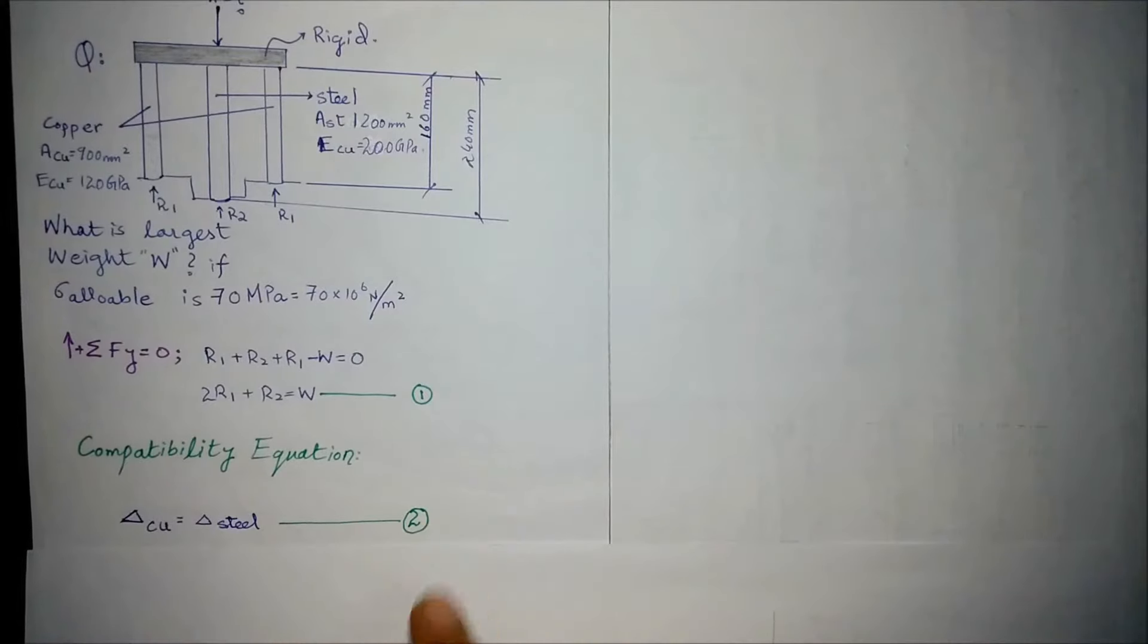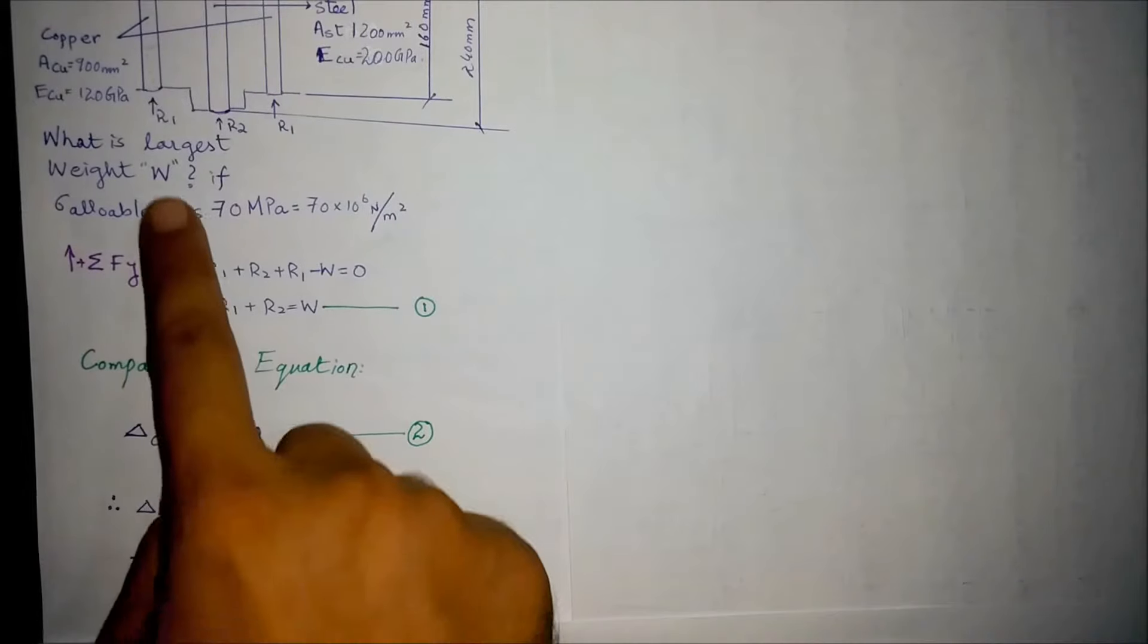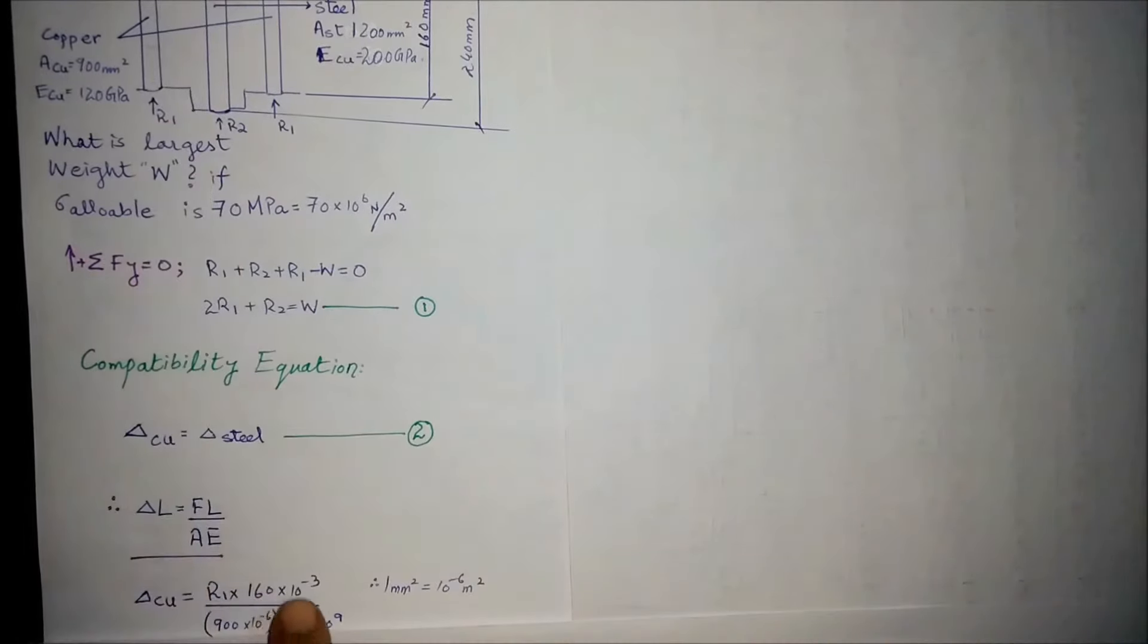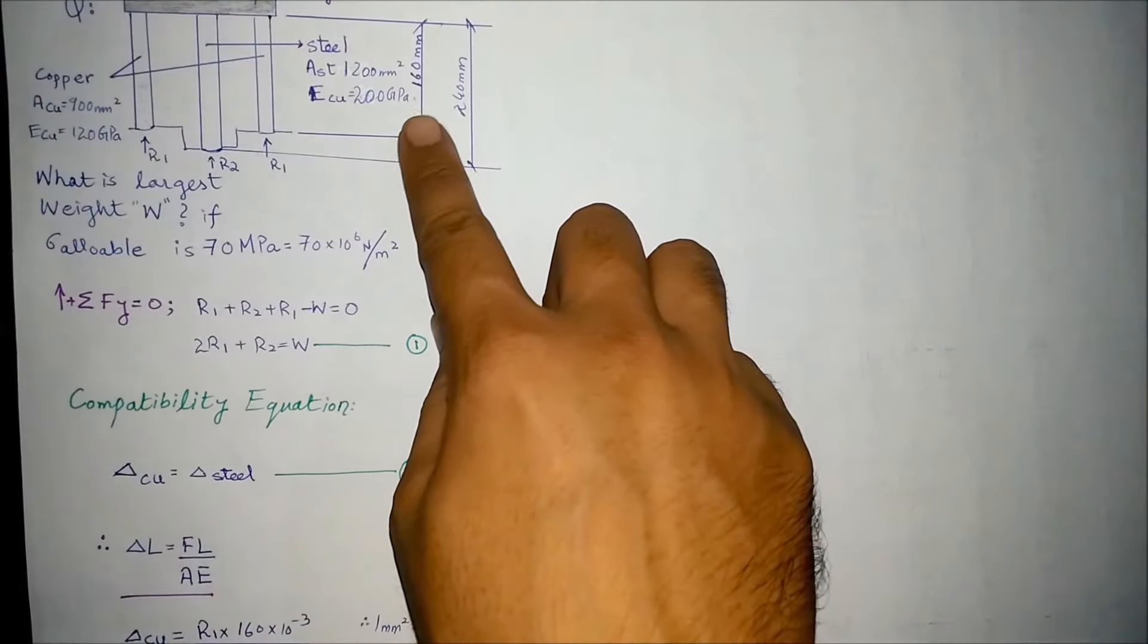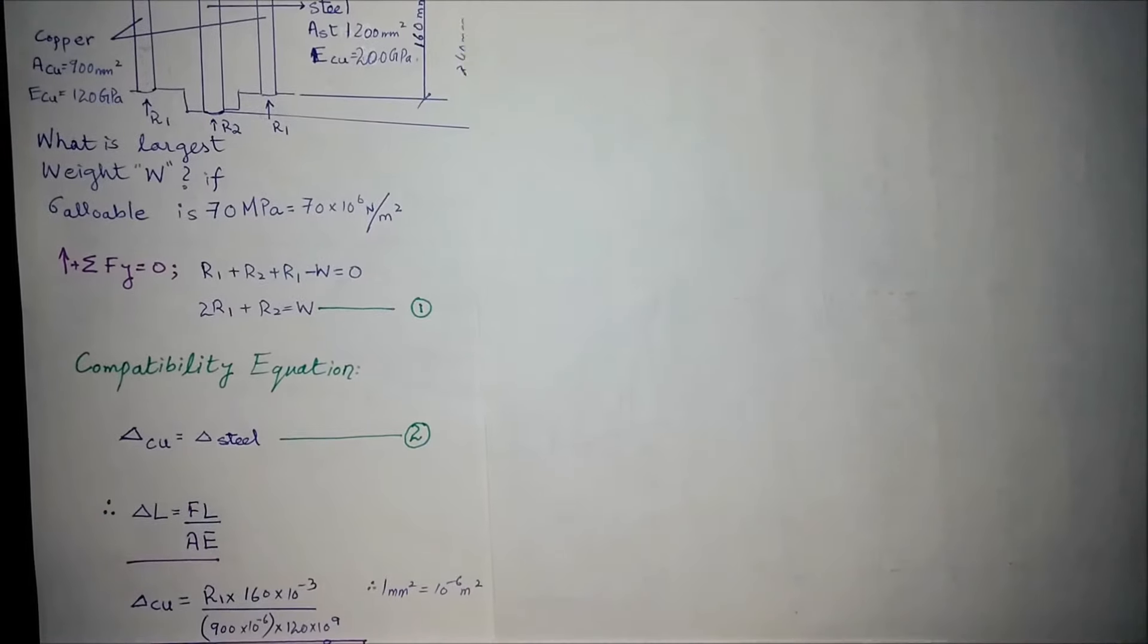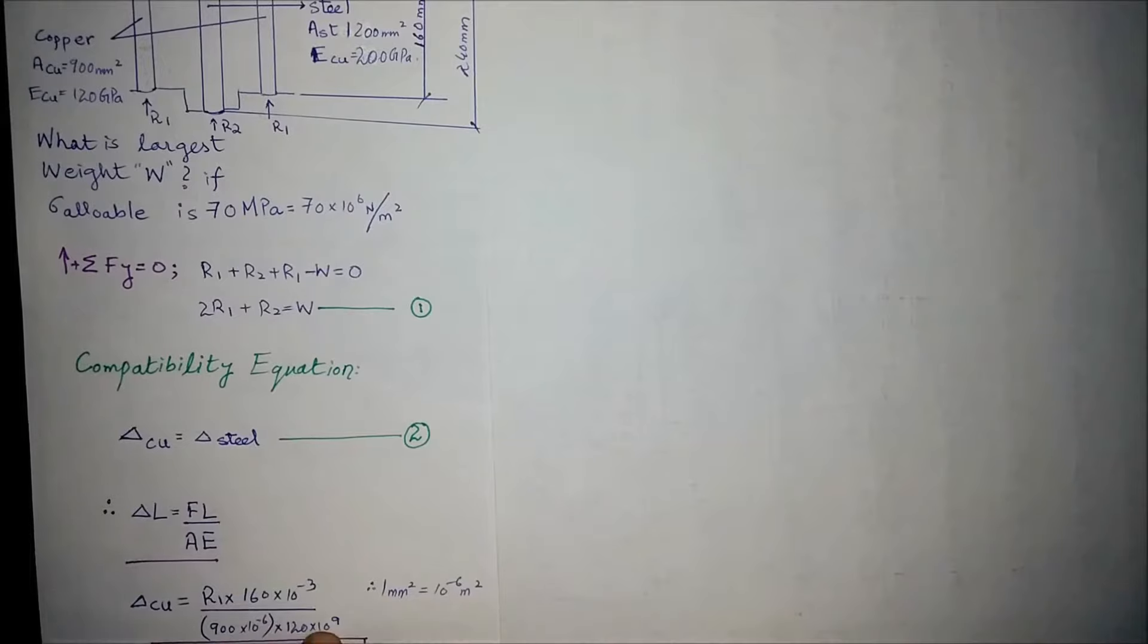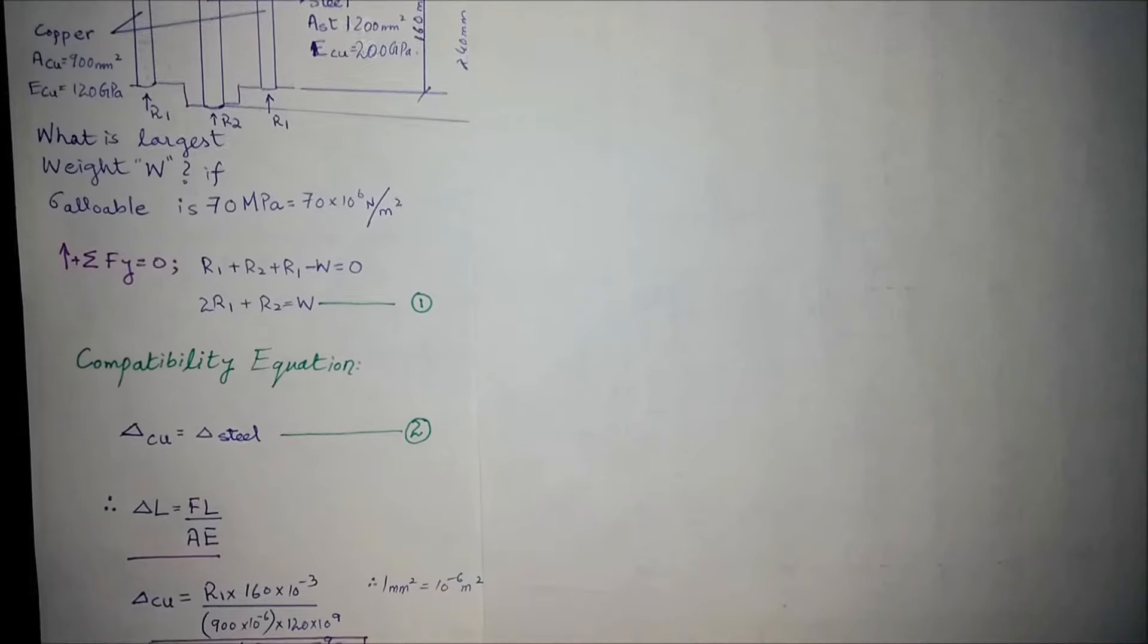This is equation number two. We know that change in length equals force times length over area into modulus of elasticity. Change in length of copper is force in copper times the length of the copper, which is 160 millimeters, over area of the copper times modulus of elasticity of copper. Upon solving, this comes out to be 1.4814 × 10^-9 in terms of R1.